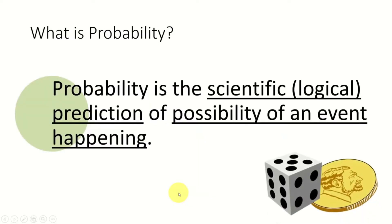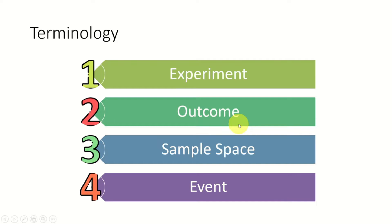Now let's formally define what probability is. Probability is the scientific or logical prediction of the possibility of an event happening. If you first understand the basic concepts in probability really seriously, you are in a really good position to understand the advanced concepts. So let's first look at the basic terminology. We are going to look at four terms: experiment, outcome, sample space, and event. Those four concepts are highly related but are four different things.